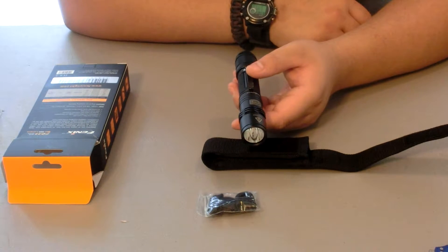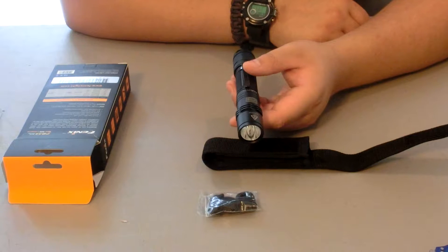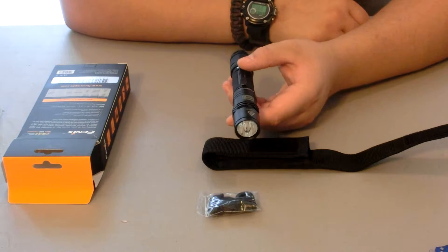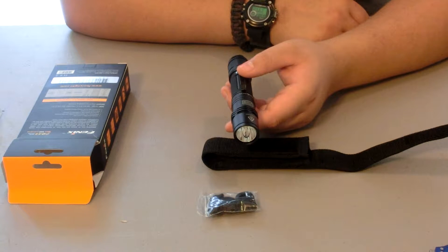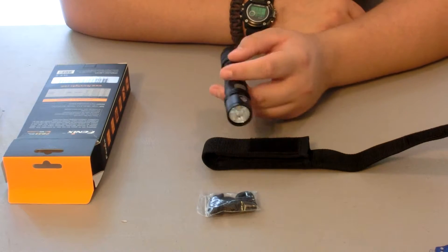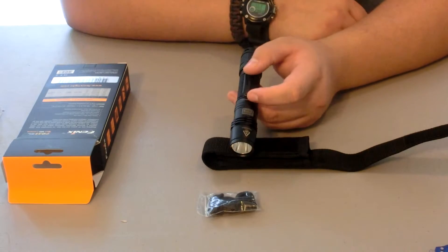The next is the Eco mode where you can basically run it forever. 14 lumens for 150 hours of continuous runtime. That's quite a lot. The next is the Strobe, 960 lumens on strobe. You will blind someone with this.